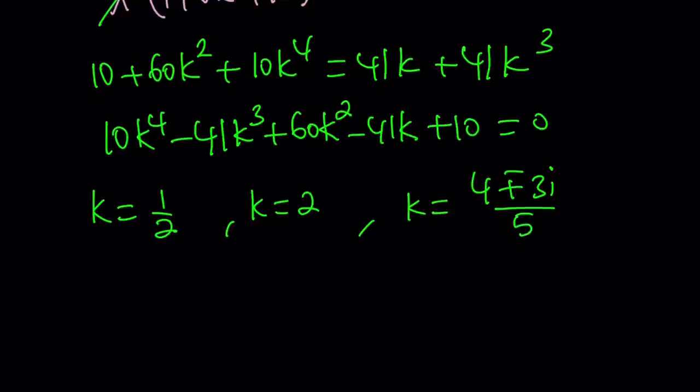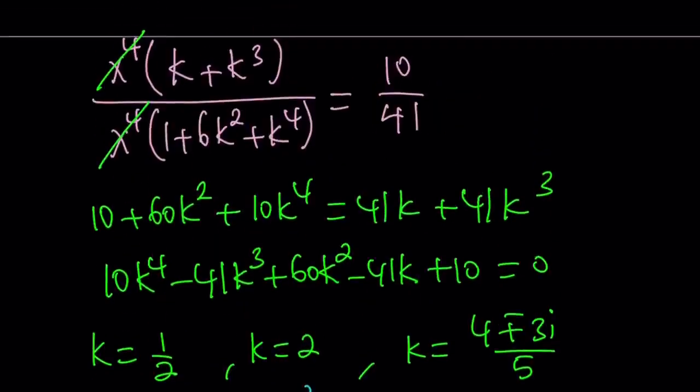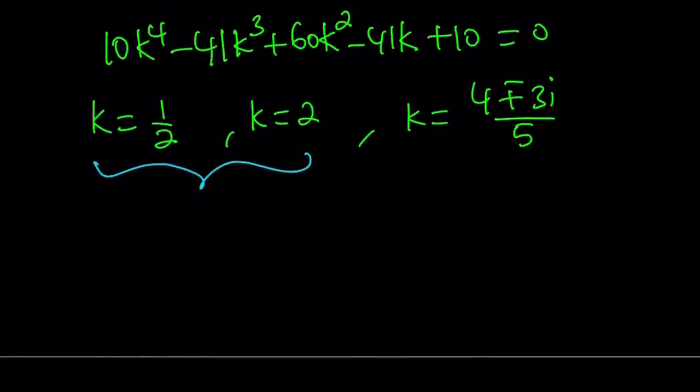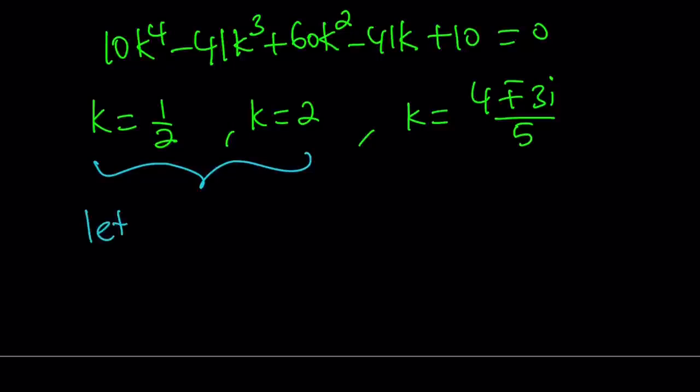Now, we see 1/2 and 2, and this is normal because we have symmetry. x and y can be switched around, so if you get y = 2x, it also means x = 2y. That's why we have this situation here. So it doesn't matter which one you use. Let's use k = 2.